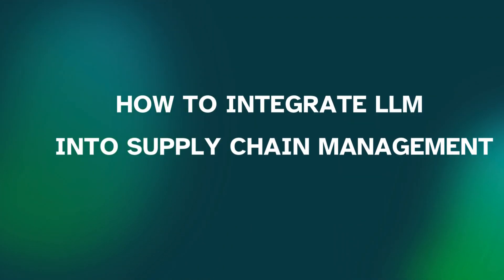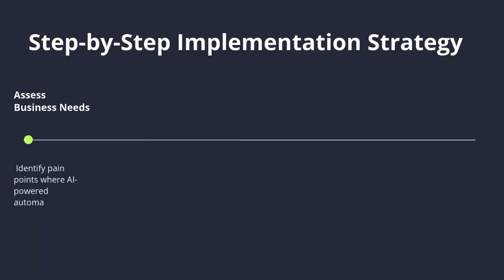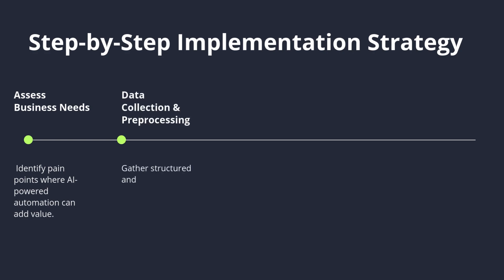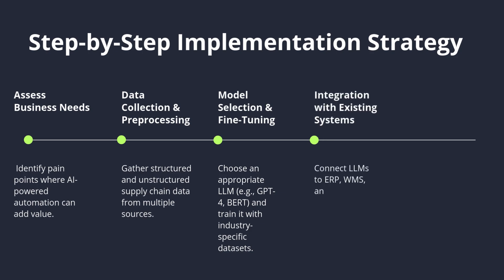How to integrate LLMs into supply chain management — a step-by-step implementation strategy. First, assess business needs: identify pain points where AI-powered automation can add value. Second, data collection and pre-processing: gather structured and unstructured supply chain data from multiple sources. Third, model selection and fine-tuning: choose an appropriate LLM, such as GPT-4 or BERT, and train it with industry-specific datasets. Fourth, integration with existing systems: connect LLMs to ERP, WMS, and TMS platforms for seamless automation.